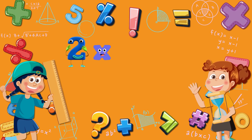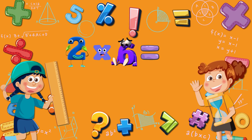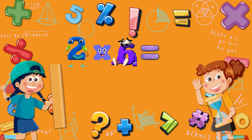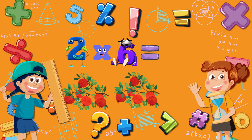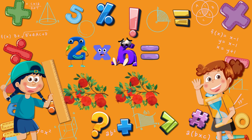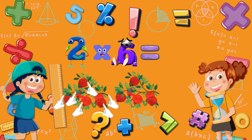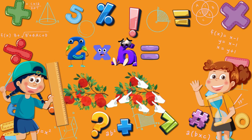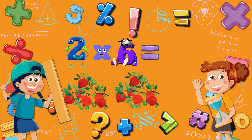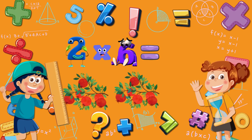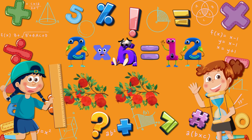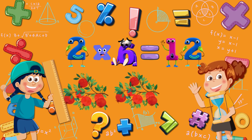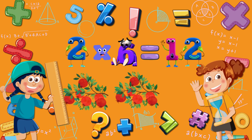Two times six is equal to? Two branches, each with six pomegranates. Six pomegranates on the first branch, and six on the second branch. Six plus six is equal to twelve. Two times six is equal to twelve.